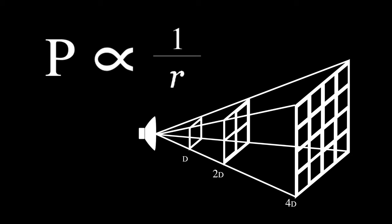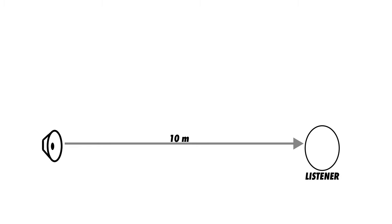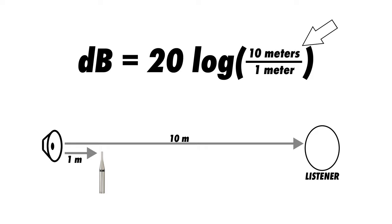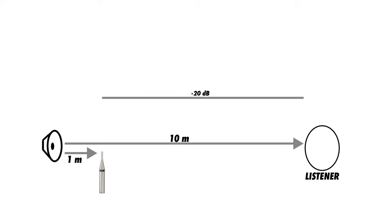With this information, we can determine if a speaker is capable of achieving our target level at the listening position. The inverse distance law states that with every doubling of distance, there's a 6 dB loss in level. This is another reason why it's so important to know where the speaker will be in relation to the listening position. Let's say we plan for the speaker to be placed about 10 meters away from the listener. Using the non-power decibel formula — comparing distance rather than power — with Distance 1 as 1 meter and Distance 2 as 10 meters, the formula tells us there will be about a 20 dB loss over that distance. Subtracting 20 from 124 tells us the speaker will produce 104 dB SPL at the listening position, confirming it's capable of providing adequate level. If the speaker couldn't get loud enough at its continuous power capacity, you'd need to choose either a more sensitive speaker or one with greater power handling capacity.